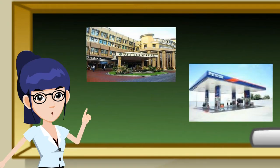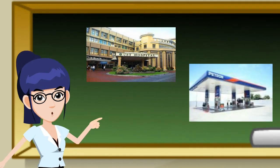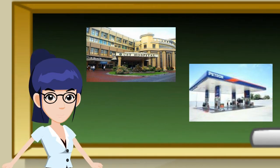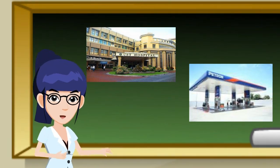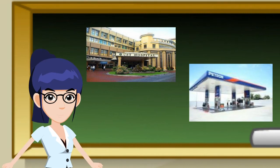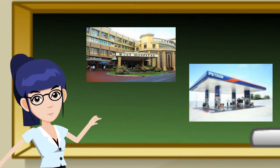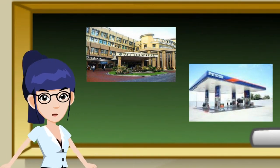Now look at the picture. Have you been in these places? You can see signs and symbols in those places. Signs and symbols are important safety tools. They help indicate various hazards that are present in a plant site,